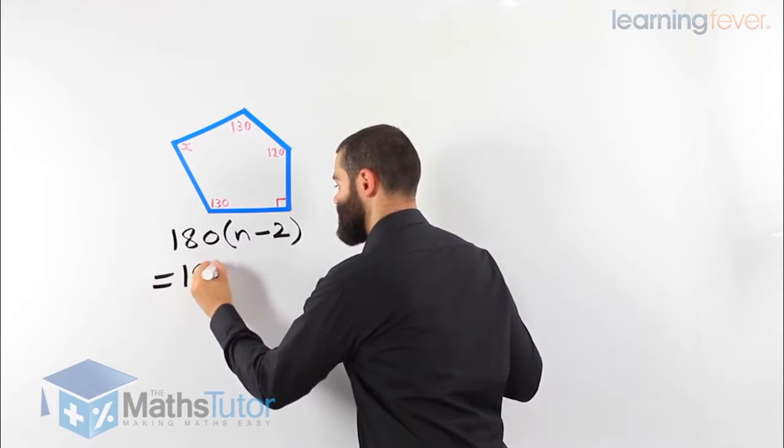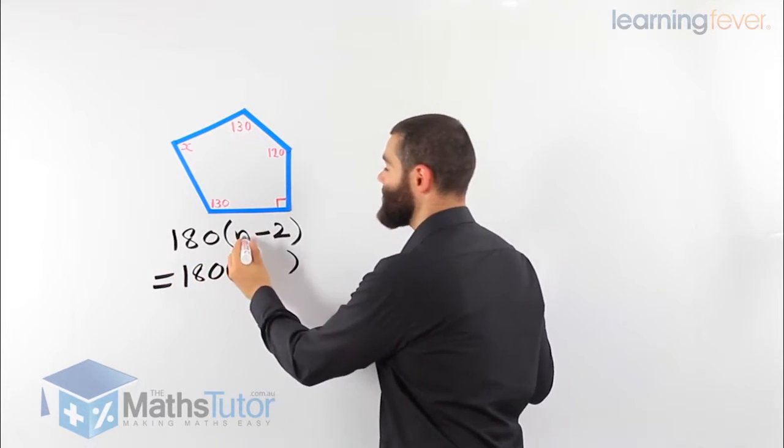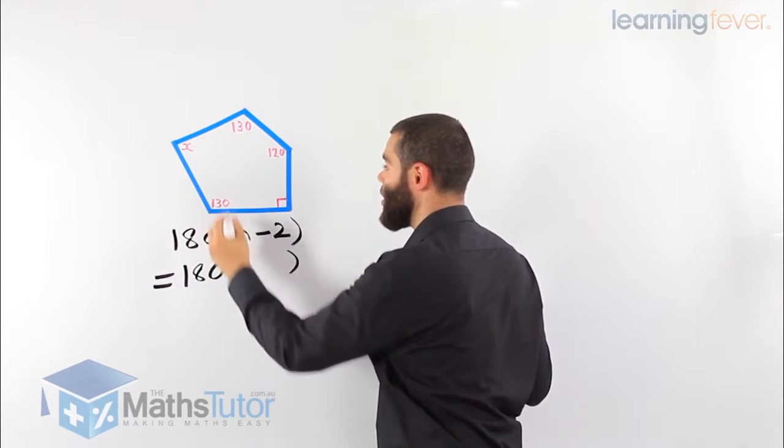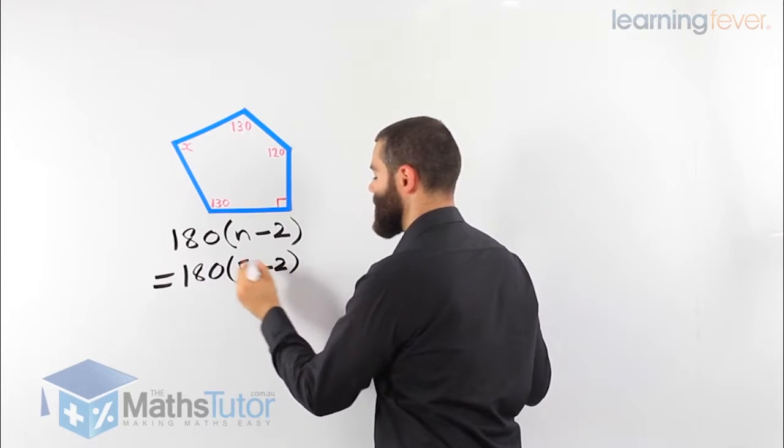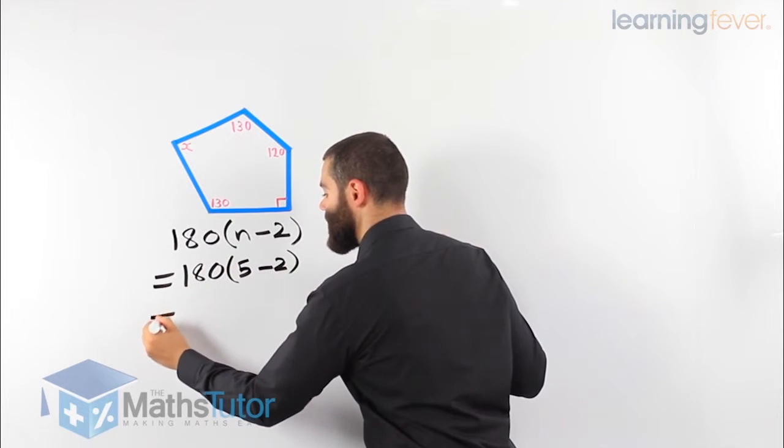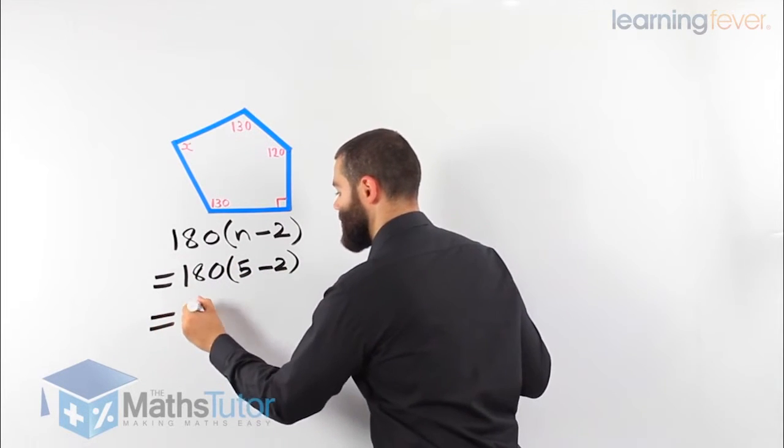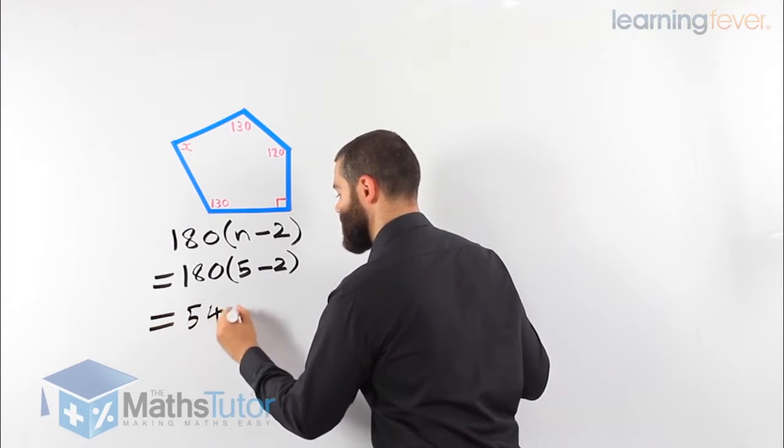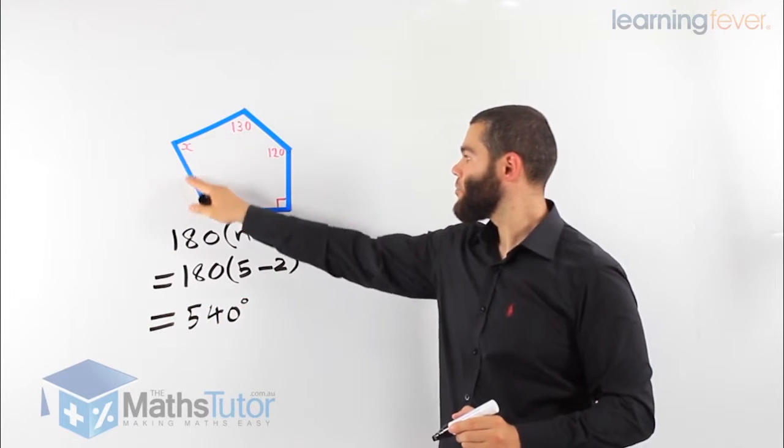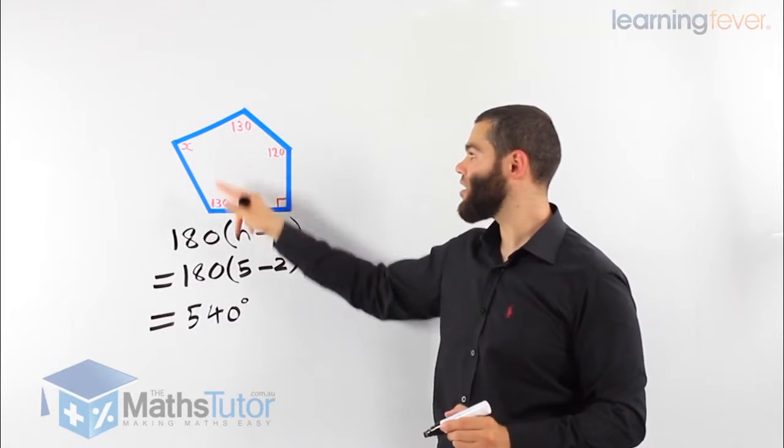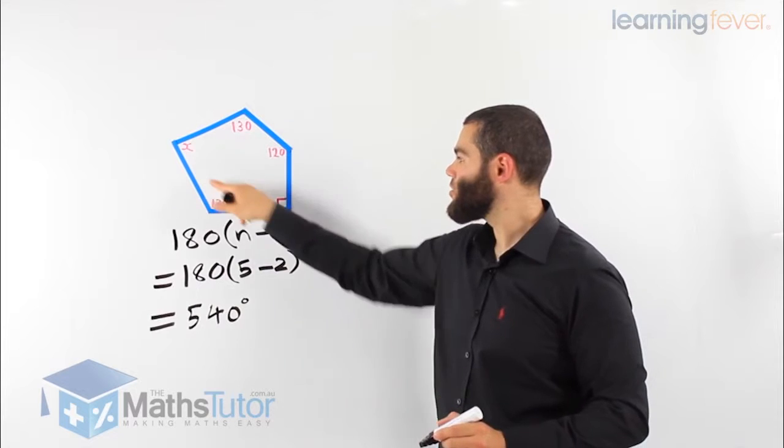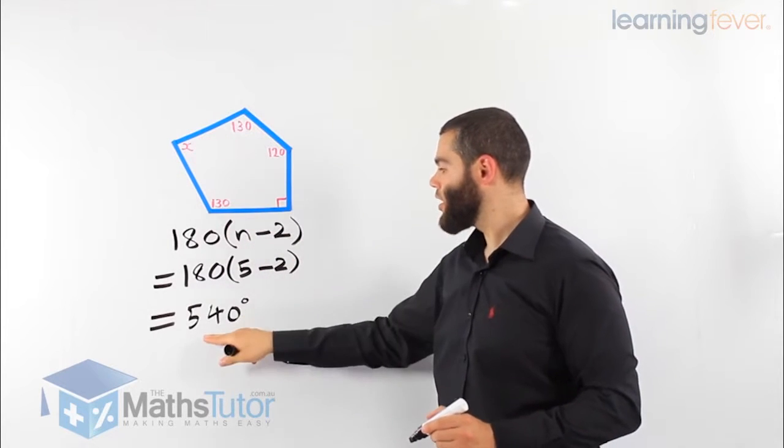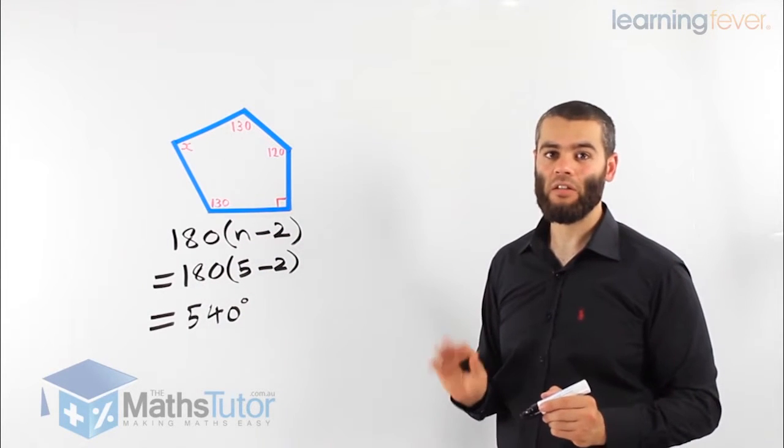180 times n minus 2. N is how many sides in this polygon? We know it's 5, 5 take away 2, times 180, we know 540 degrees. So this polygon here, it has 5 sides, we know the formula to find the angle sum, all the angles total up, they all add up to 540 degrees.